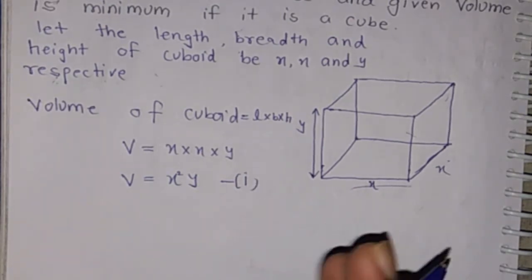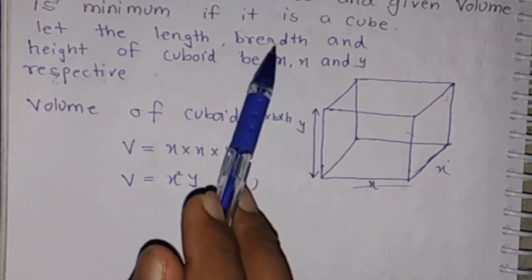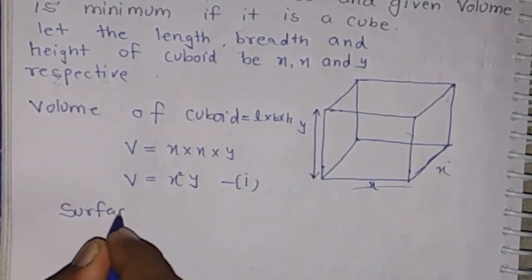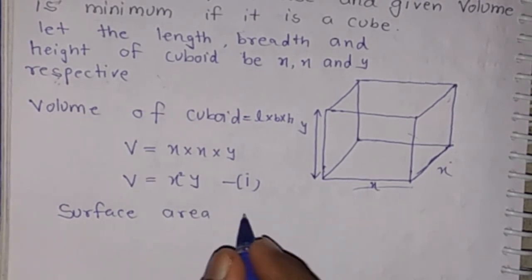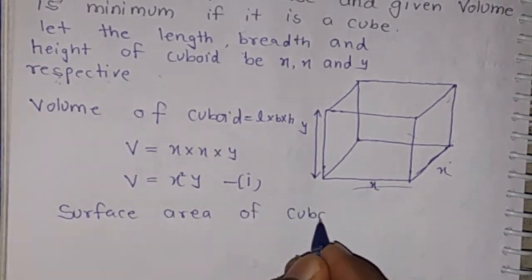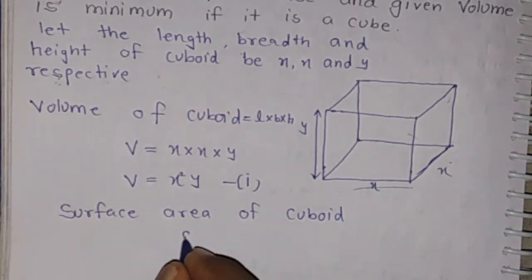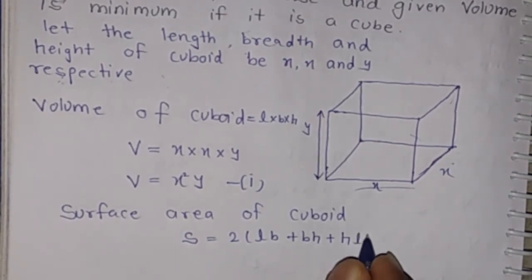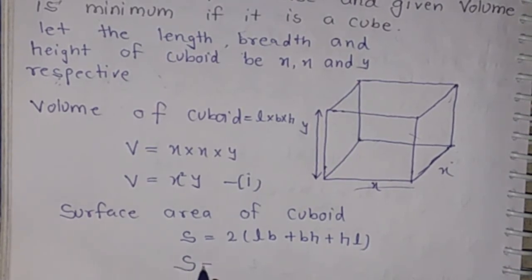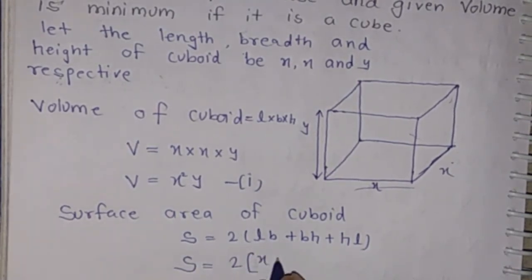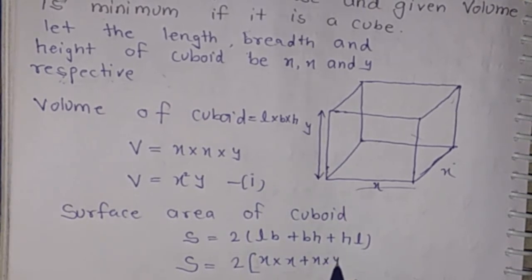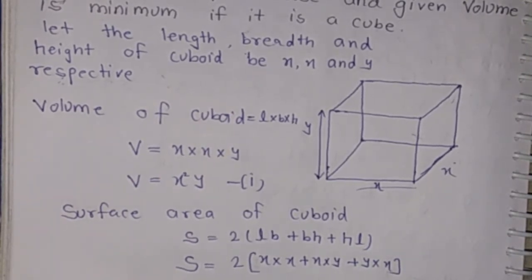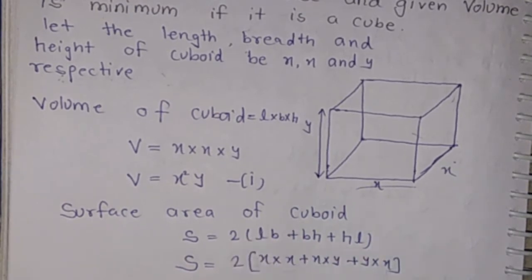We have to show that the surface area is minimum when it is a cube. Surface area of cuboid is S equal to 2 times (LB plus BH plus HL), which gives 2 times (x into x plus x into y plus y into x), so S equals 2x squared plus 4xy.